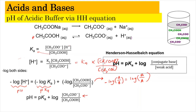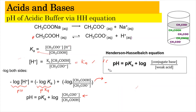The general Henderson-Hasselbalch equation is: pH = pKa + log([conjugate base] / [weak acid]). This is the final formula you need to know, and we will use it to solve problems regarding buffer solutions.